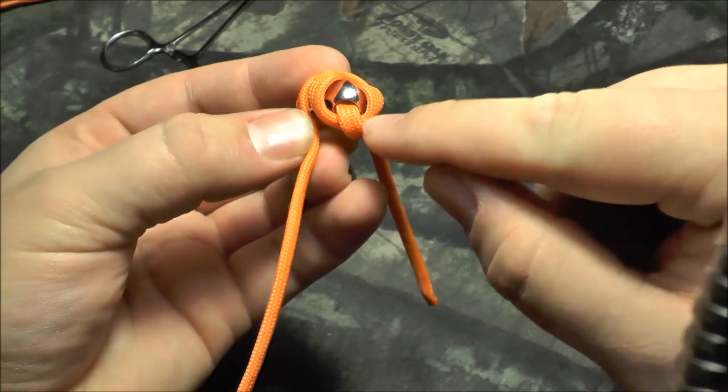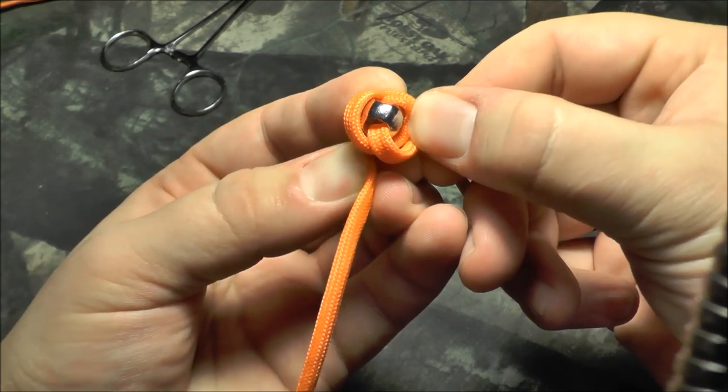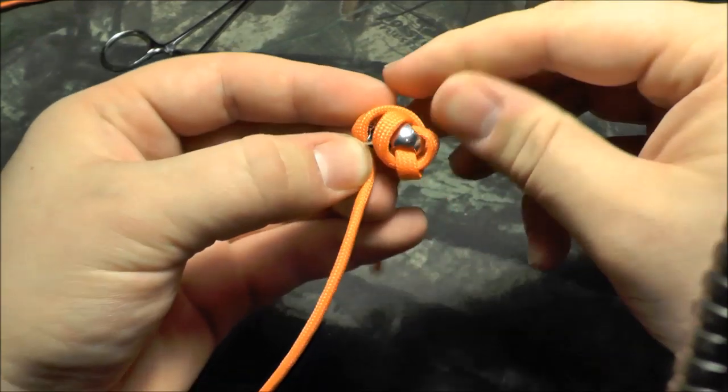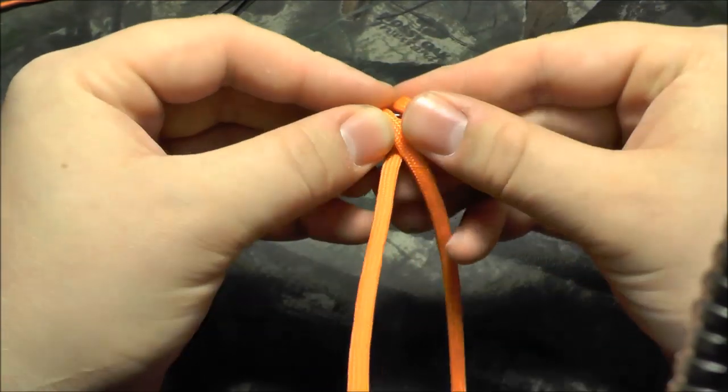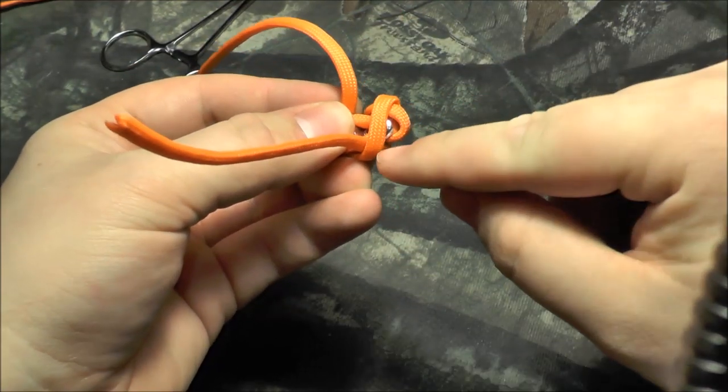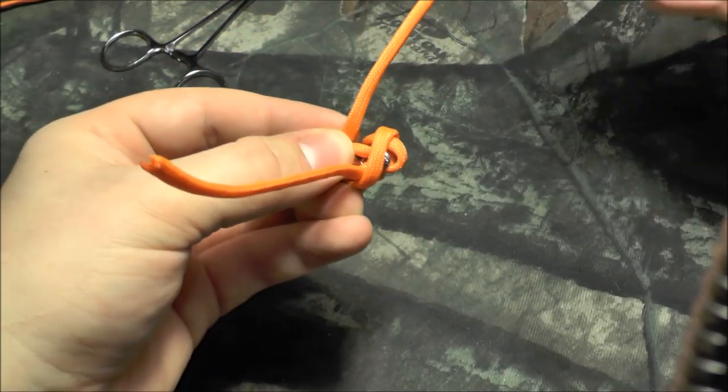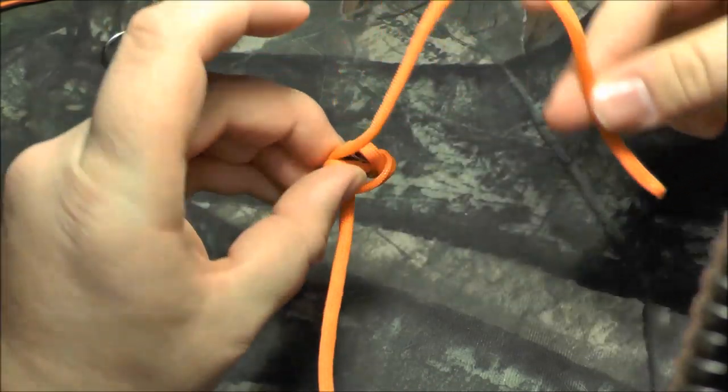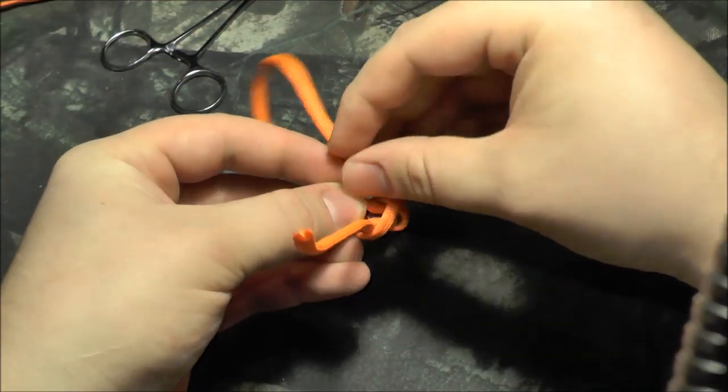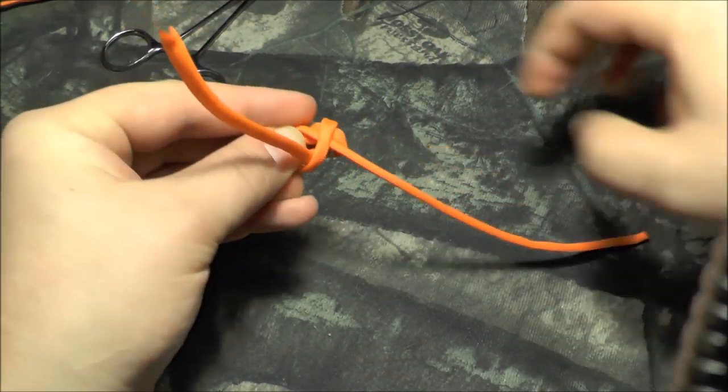These two cords right here, the ones that come out the back of his head, you want to keep these underneath his skull. You don't want to let them slip up and onto his forehead. Keep them underneath. You're going to flip them over, and this cord right here, which is the one that went up and around his nose, you're going to bring your nose cord through there to lock it down.